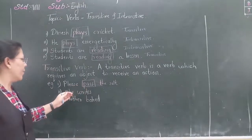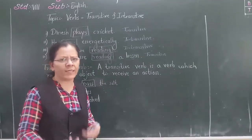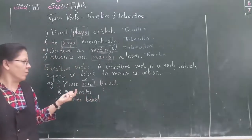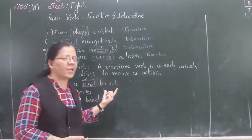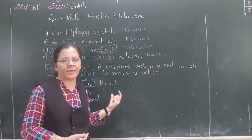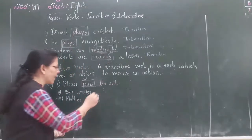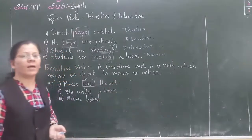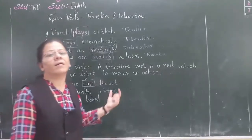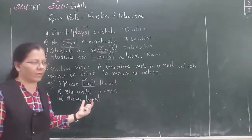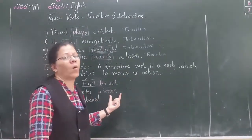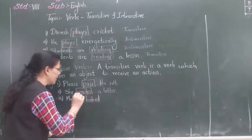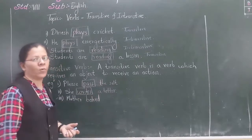See the second example. 'She writes.' She writes what? There is no object. Nobody or nothing receives the action of writing. But if I say 'she writes a letter', now there is a receiver of the action. The action of writing is done on the letter. Hence the verb writes is a transitive verb.